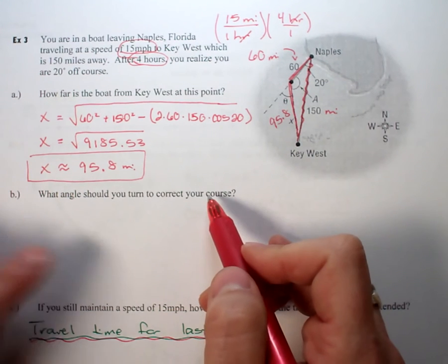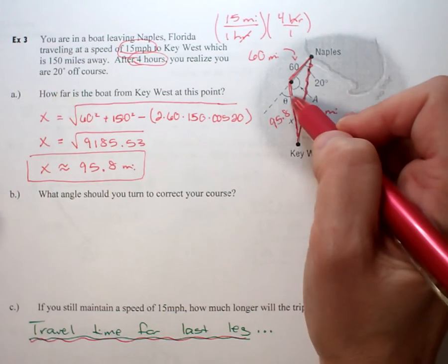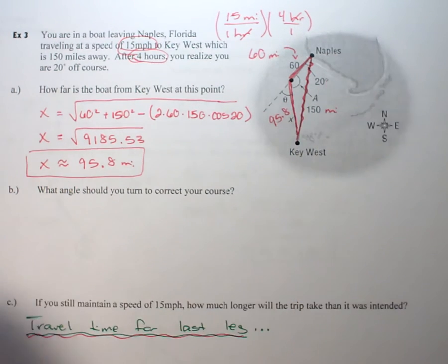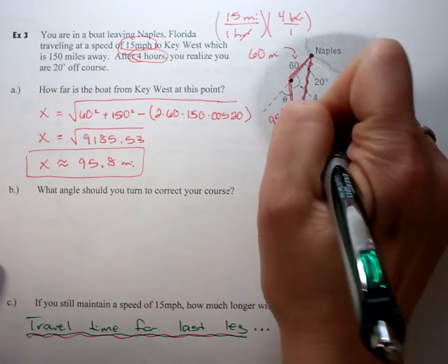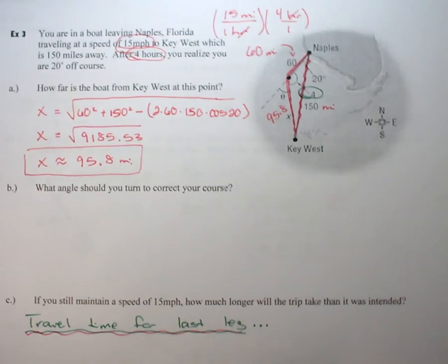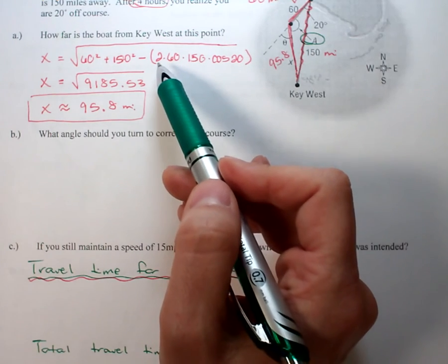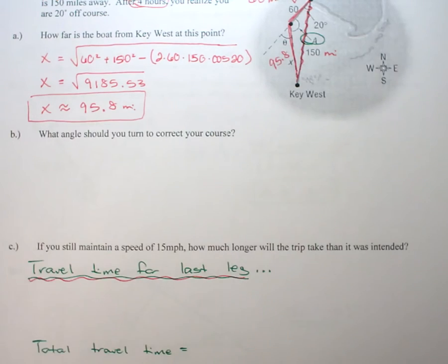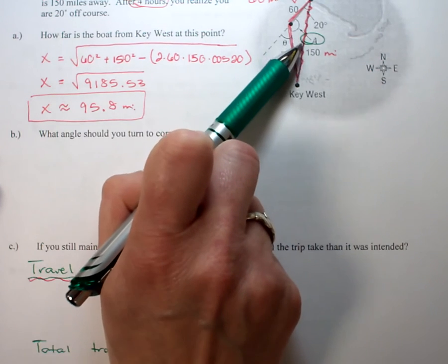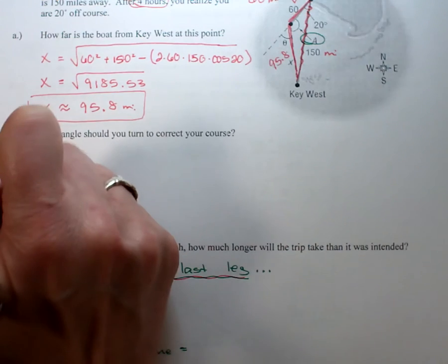The next question is what angle should we turn to correct our course. We're going to find this angle A. Now, this is a really important element: since we started this problem using law of cosines peace fingers, we're going to continue it with law of cosines. Whatever law you start with, you need to finish the problem with that same law.